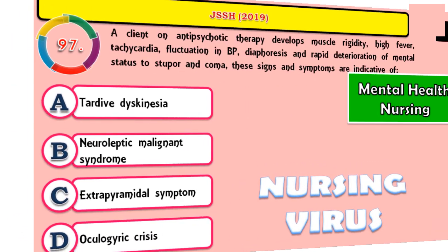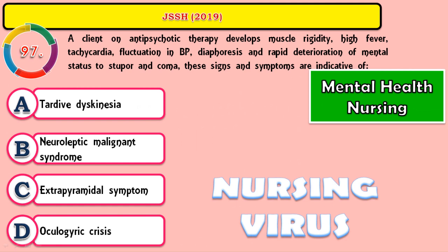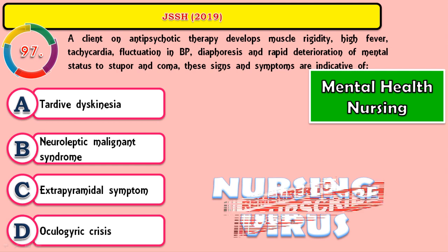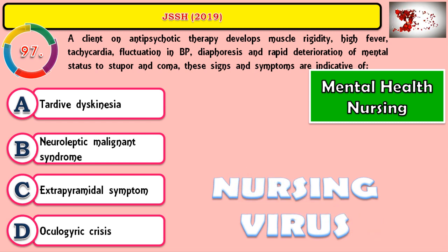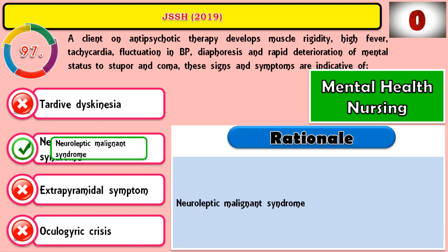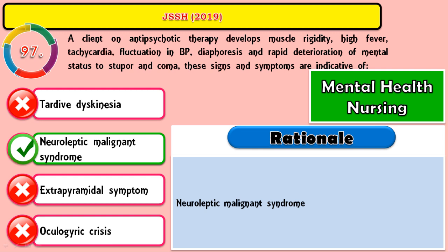Question 97: A client on antipsychotic therapy develops muscle rigidity, high fever, tachycardia, fluctuation in BP, diaphoresis, and rapid deterioration of mental status to stupor and coma. These signs and symptoms are indicative of? The correct answer is neuroleptic malignant syndrome. All these listed problems are mainly indicating the person is experiencing EPS belonging to the major symptom group of neuroleptic malignant syndrome.